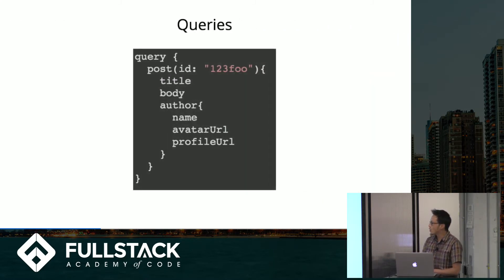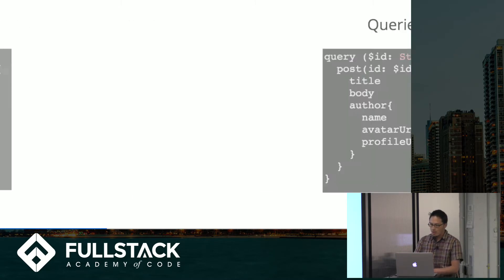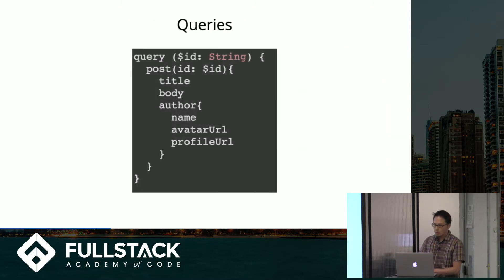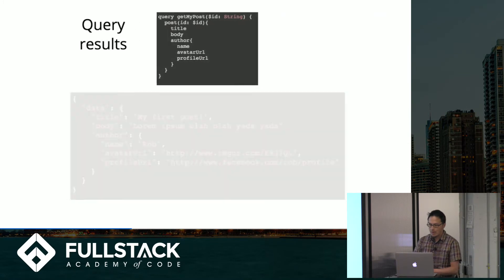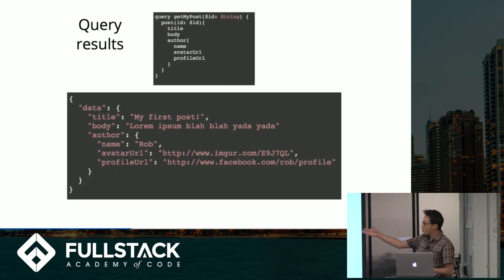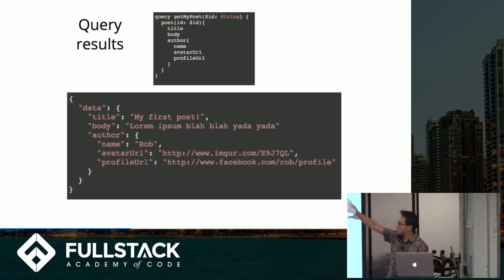You can also use arguments — for example, to request a specific post. You can dynamically use arguments, and you can also name your query, like 'getMyPost'. The result of your query would be very similar in structure to the query itself, so it matches up pretty nicely.